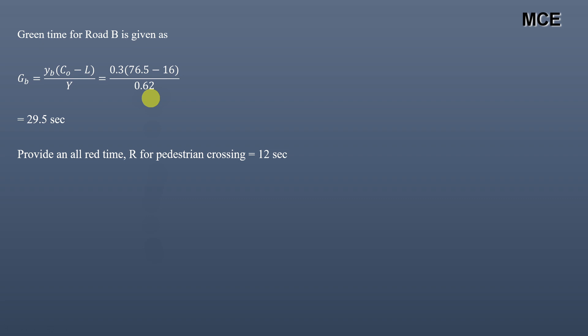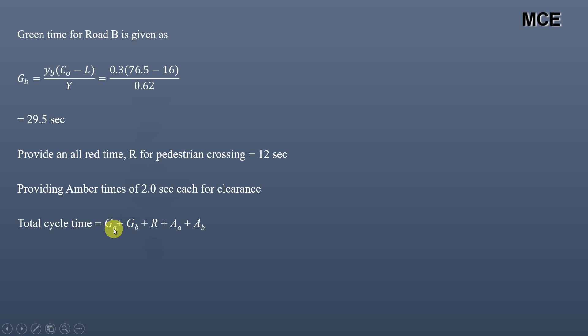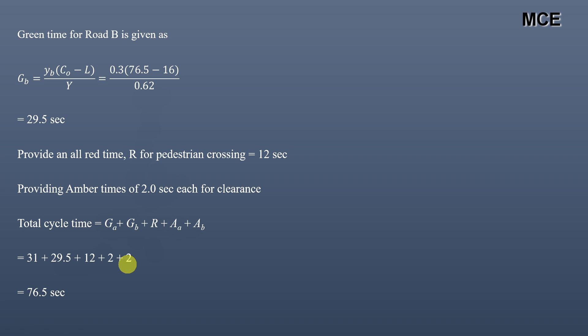We are given the all-red time r = 12 seconds, and we assume amber time = 2 seconds for each phase (used for vehicle clearance). The total cycle time = GA + GB + all-red time + amber A + amber B = 31 + 29.5 + 12 + 2 + 2 = 76.5 seconds, which confirms our optimum cycle time.